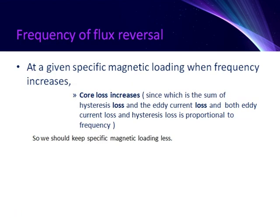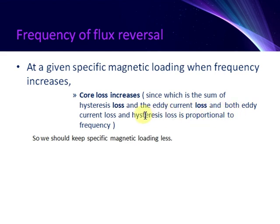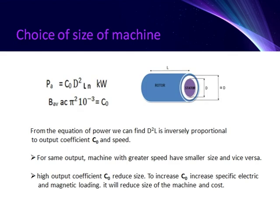So B of the machine should not exceed 2.2 Weber per meter square. Regarding frequency of flux reversal: at a given specific magnetic loading, when frequency increases, core loss increases, since core loss is the sum of hysteresis loss and eddy current loss, and both eddy current loss and hysteresis loss are proportional to frequency. So we should keep specific magnetic loading less.